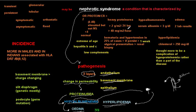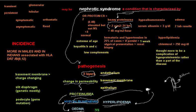Now let's get back to the definition of nephrotic syndrome. It is a condition characterized by heavy proteinuria — the most important feature. Heavy proteinuria means more than 2 grams in 24 hours, or more than 40 milligrams per hour. Another measurement used is the protein-to-creatinine ratio: if it is more than 2, we have proteinuria. Normally, we may have some protein in urine, but it should be less than 4 milligrams per hour.